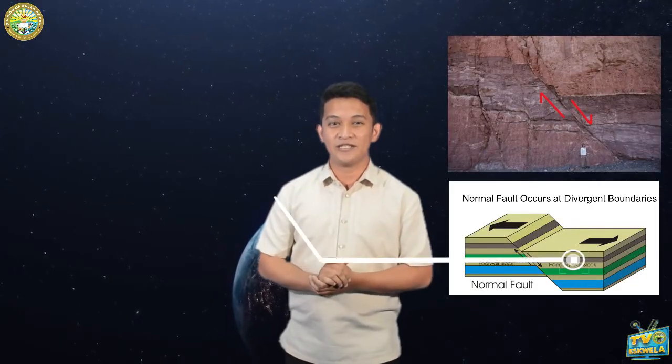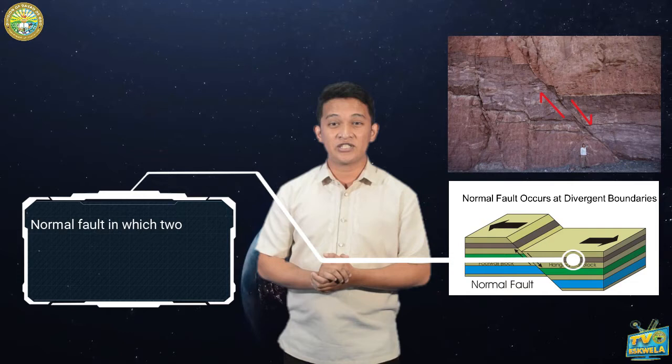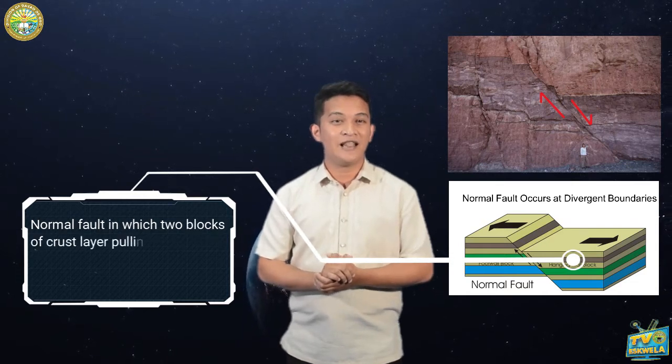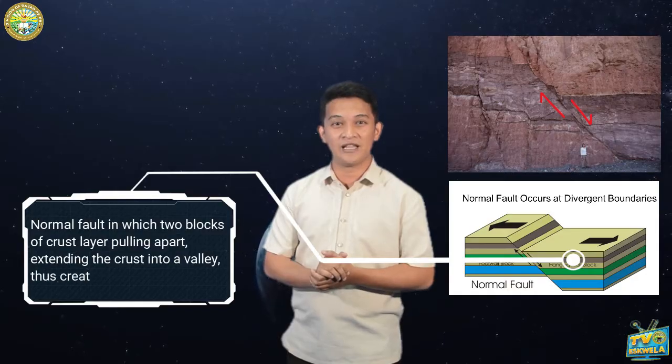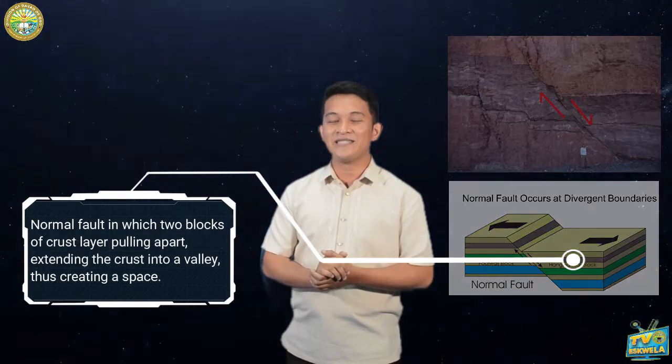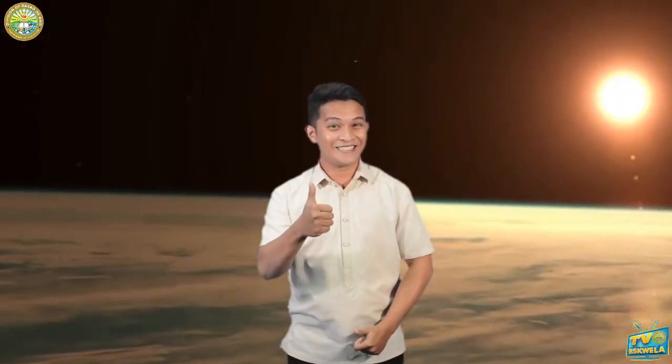The second fault is called the normal fault, in which two blocks of the crust layer pull apart, extending the crust into a valley, thus creating a space. A normal fault has the upper side or hanging wall that appears to have moved downward with respect to the footwall. Let's demonstrate it with the use of our hands.